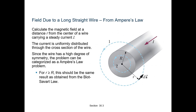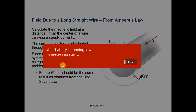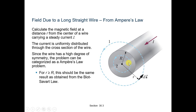Field due to the long straight wire from Ampere's Law: to calculate the magnetic field at distance r from the center of a wire carrying a steady current I, where the current is uniformly distributed, the problem can be characterized as an Ampere's Law problem due to the high degree of symmetry. For r greater than R, this gives the same result as obtained from the Biot-Savart law.